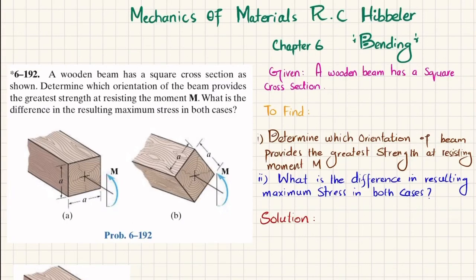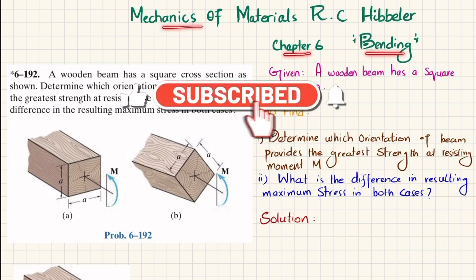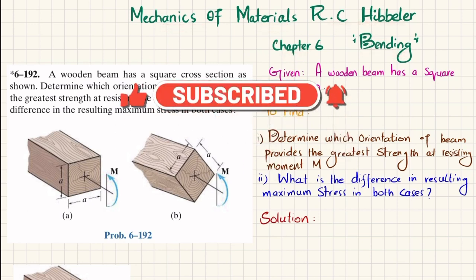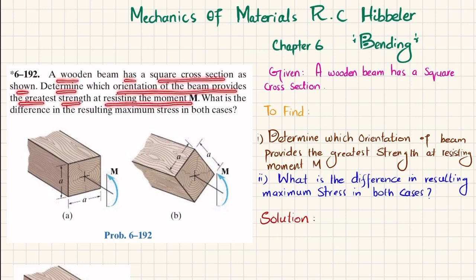Welcome back. Problem 6-192 is taken from chapter number 6, Bending, from the book Mechanics of Materials by R.C. Hibbeler. The statement is: a wooden beam has a square cross section as shown. Determine which orientation of the beam provides the greatest strength at resisting the moment M.